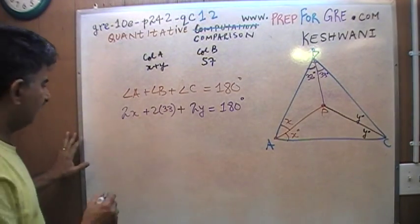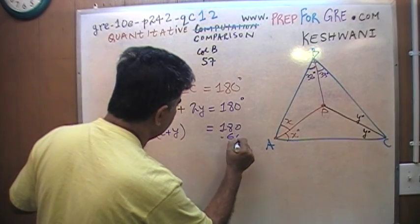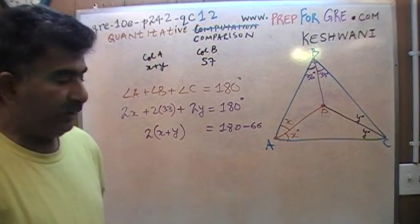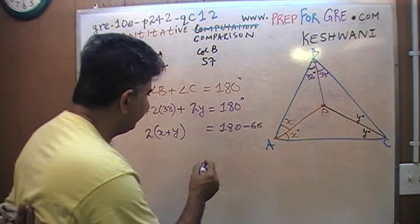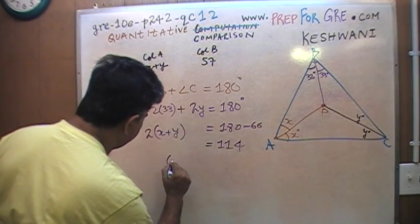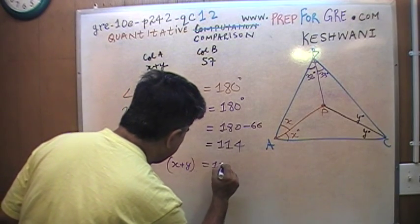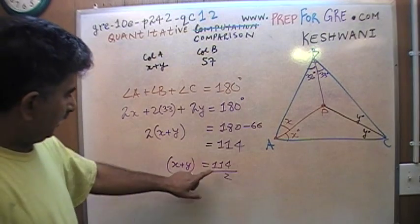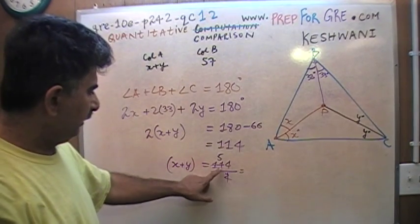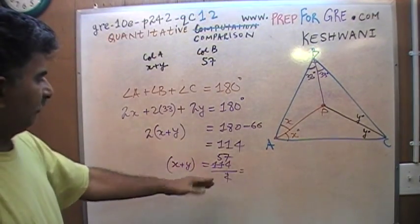I'm going to subtract 66 from both sides. So 2X plus 2Y equals 180 minus 66. I know 180 minus 60 is 120, so it's got to be 114. So 2 times X plus Y is 114, and therefore X plus Y is simply 114 over 2, which equals 57.